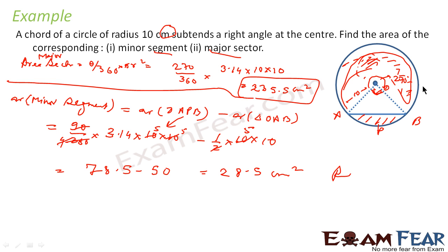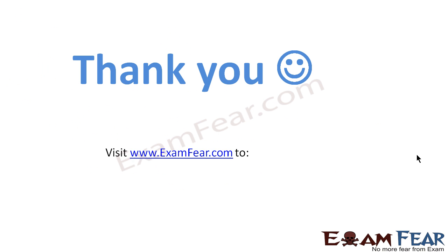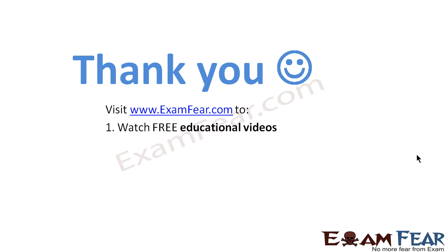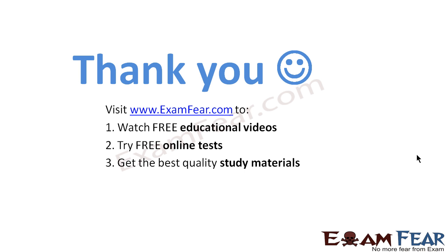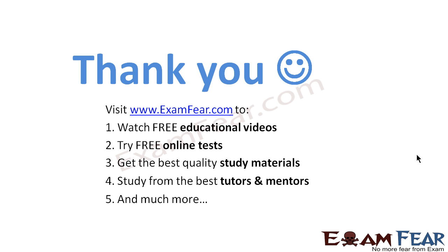For this case, the critical part is: why 270 degrees? Because we are talking about the major sector, so you take the complete remaining angle of 270 degrees. Thank you. Visit examfear.com to watch free educational videos, try free online tests, get the best quality study materials, and study from the best tutors and mentors. Thanks once again.